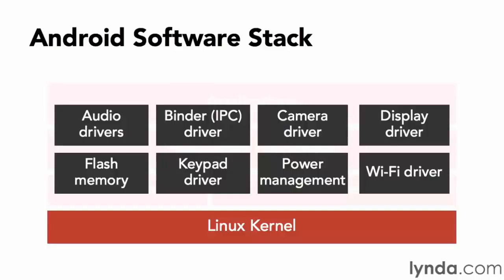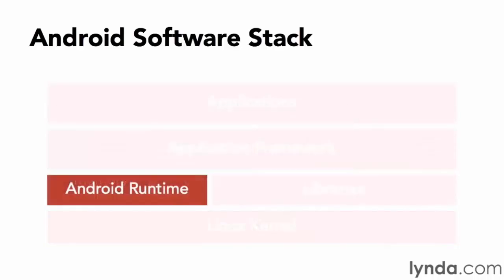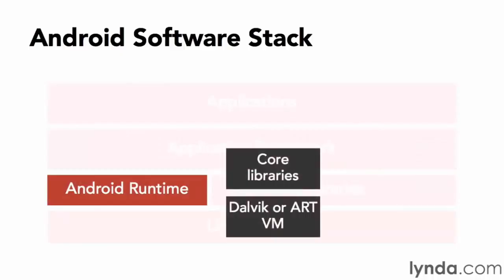On top of the kernel is the Android runtime and a set of libraries that enable the operating system's behaviors. Above that is the application framework, and at the top are the apps — both those included with the OS and those the user installs. The Linux kernel includes a set of drivers — for audio, camera, display, keypad, flash memory, power, Wi-Fi, and so on. It's up to the OEMs — the device manufacturers — to customize these drivers for their devices.